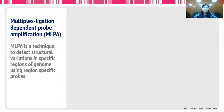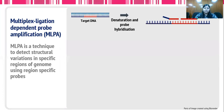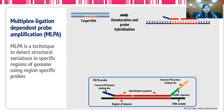Another technique is the multiplex ligation-dependent probe amplification, commonly called MLPA. This technique is used to detect structural variations in a specific region of the genome. The target DNA is first denatured and a specific probe is hybridized to that target DNA.